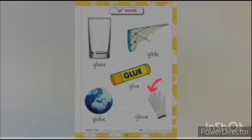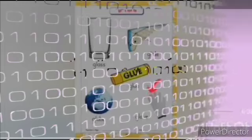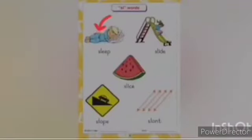G-L-O-V-E Glove. SL words and the sound of SL is Slur. S-L-E-E-P Sleep. S-L-I-D-E Slide. S-L-I-C-E Slice. S-L-O-P-E Slope. S-L-A-N-T Slant.